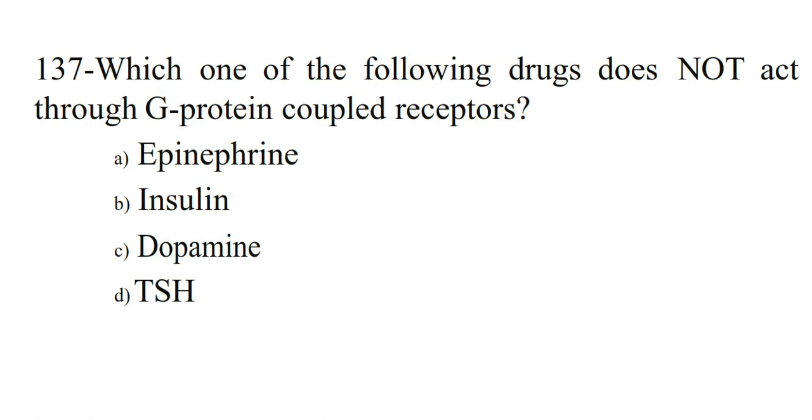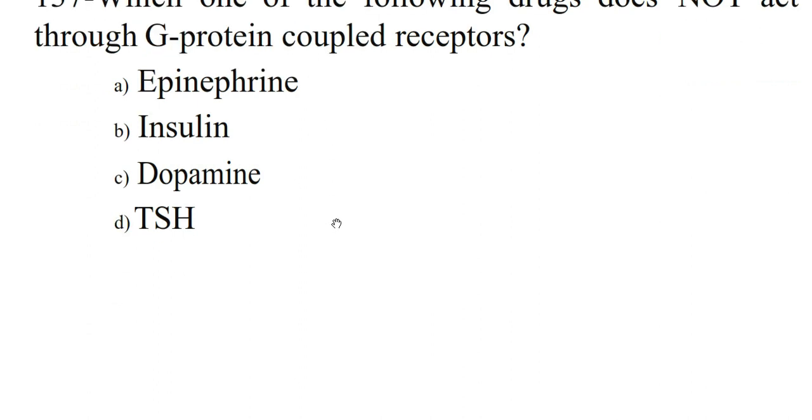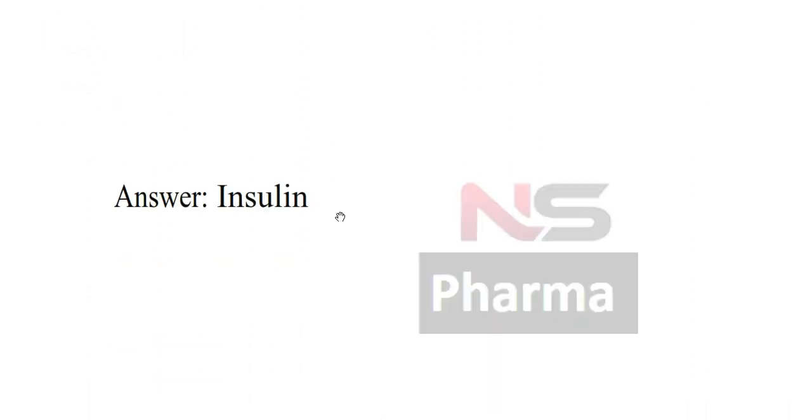Next question. Which one of the following drugs does not act through G-protein coupled receptors? Option A Epinephrine, Option B Insulin, Option C Dopamine, Option D TSH. Answer: Insulin.